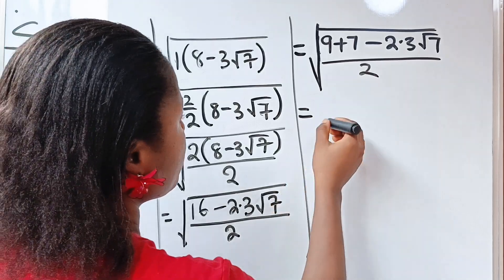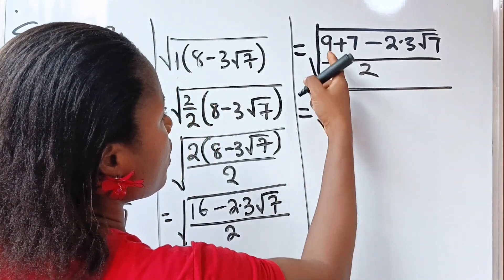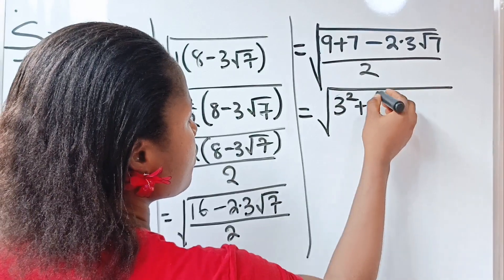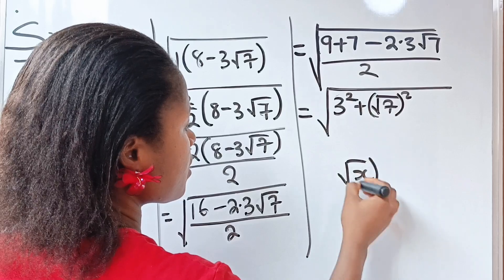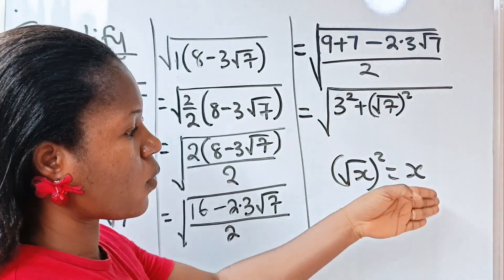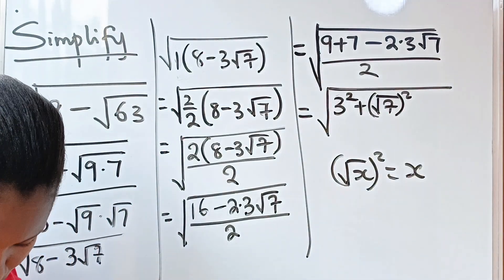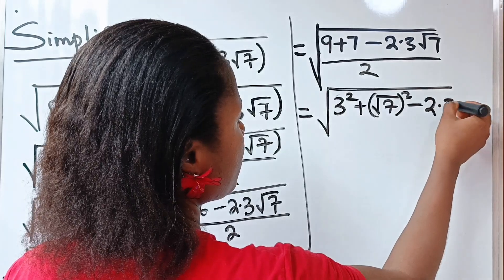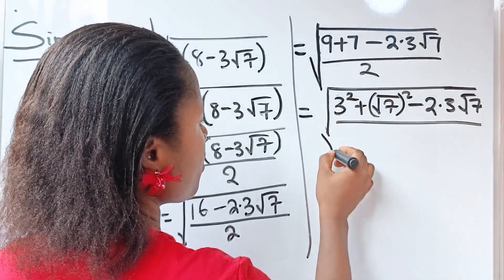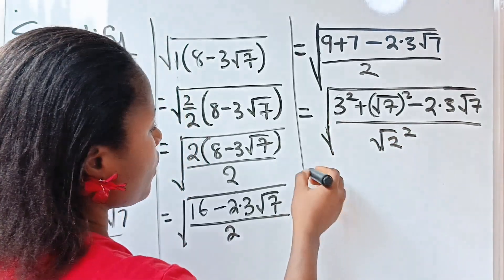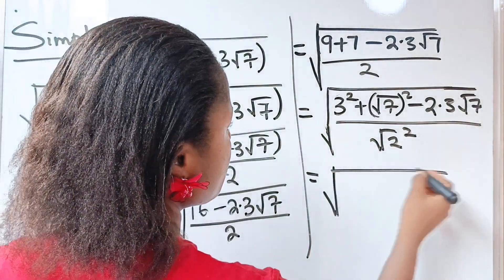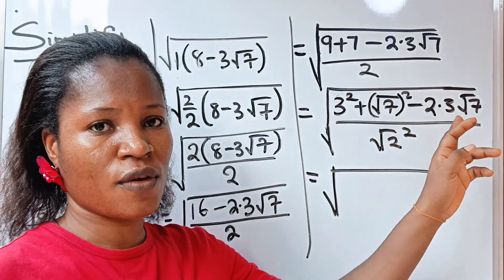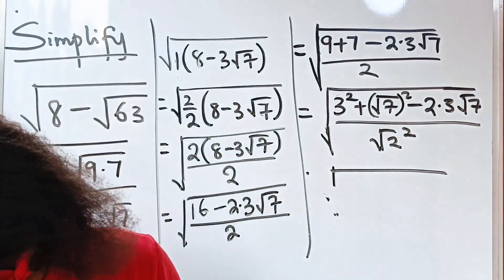So this is equal to the square root of: 9 can be written as 3 squared, plus 7 can be written as square root of 7 squared — because square root of x squared is equal to x. So we can write 7 as square root of 7 squared. Minus 2 multiplied by 3 root 7, divided by the same thing. We can also write 2 as square root of 2 squared. Now let us look at the numerator of this fraction and notice something.